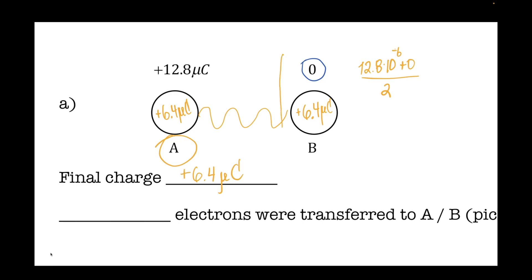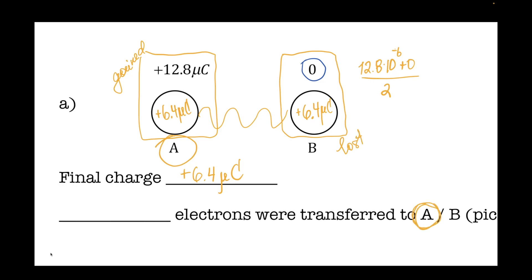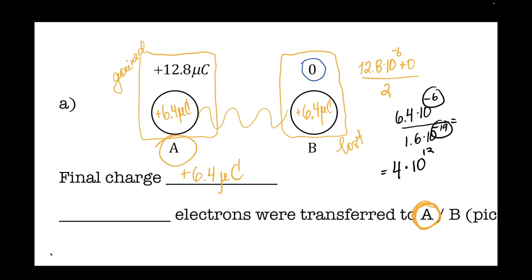By how much did it change? The change was 6.4 microcoulombs. If you find the difference between 12.8 and 6.4, it's 6.4. This one gained electrons and that one lost electrons, so the electrons were transferred to sphere A. How many? 6.4 × 10⁻⁶ divided by 1.6 × 10⁻¹⁹: 6.4 over 1.6 is 4, and 10 to the 13th. So 4 × 10¹³ electrons were transferred to sphere B.